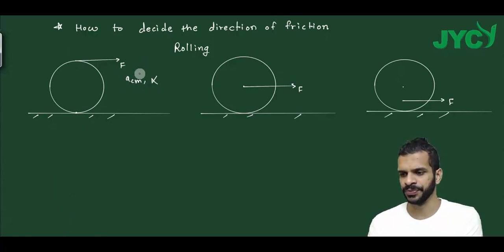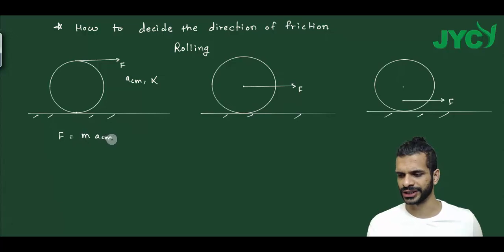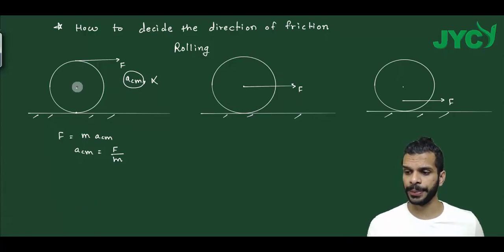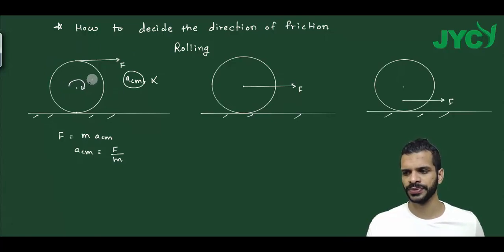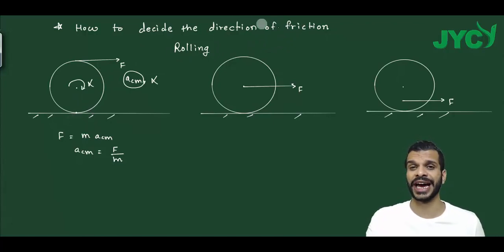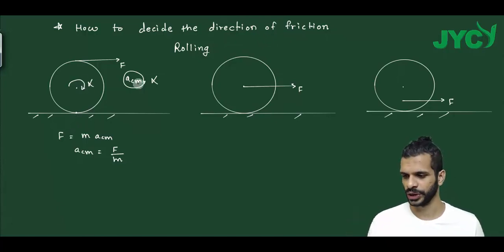Now F equals mass times acceleration of center of mass, so acceleration of center of mass equals F by m. What about alpha? There will be alpha in the clockwise direction because the body will rotate clockwise. I just need to find the friction direction for deciding, so alpha value will be enough here.